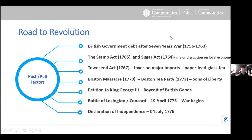This looks at the push and pull factors — the road to revolution. Why did this war start? It involved the 13 colonies in North America, the British Parliament, and the British king. The British government had defended American militias and states during the Seven Years War, 1756–1763 — a war involving France and native American tribes, involving guerrilla raids and ambushes, and quite expensive.